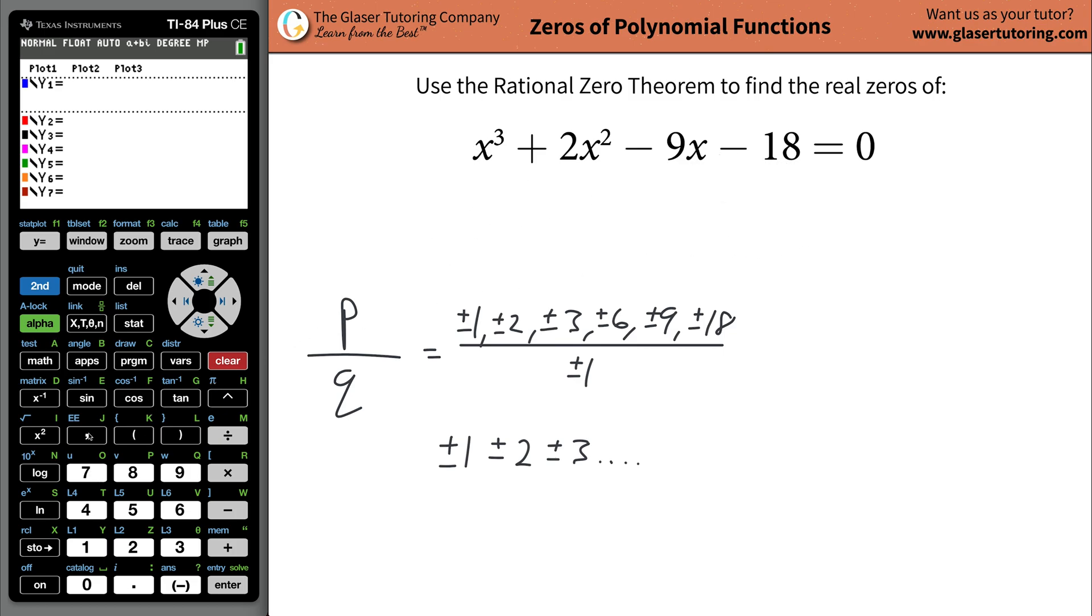So just graph the function. Let me just clean it up so you can clearly see this. So just graph that function up there. x cubed, x raised to the third, then plus two x squared, then minus nine x, then minus 18. Just hit graph.